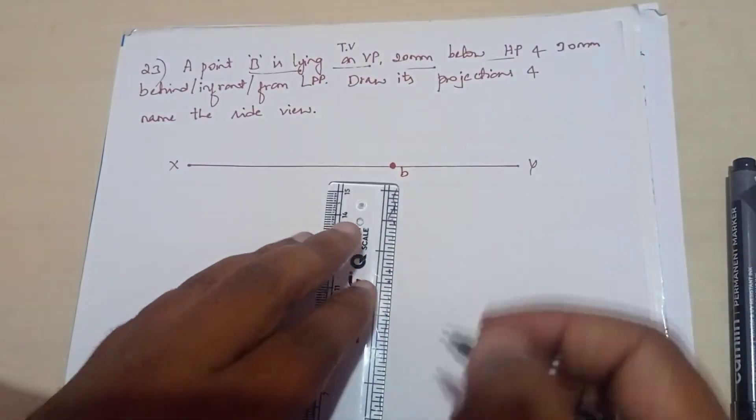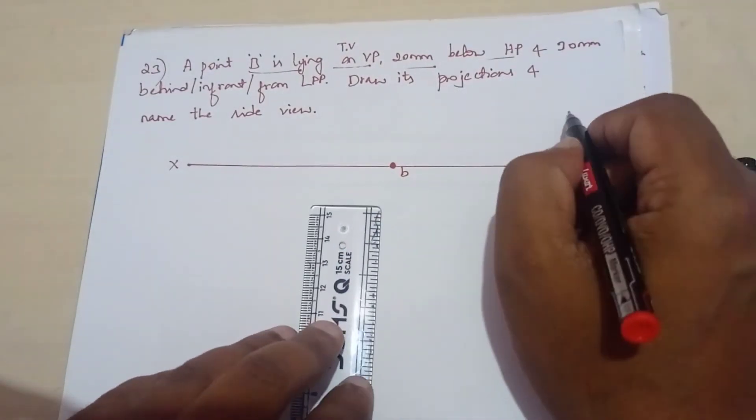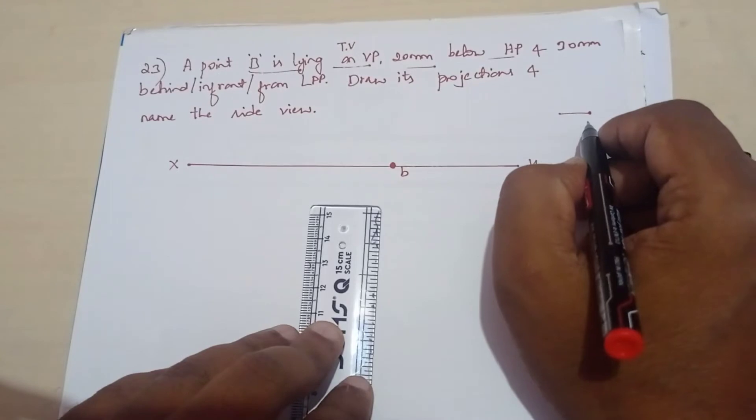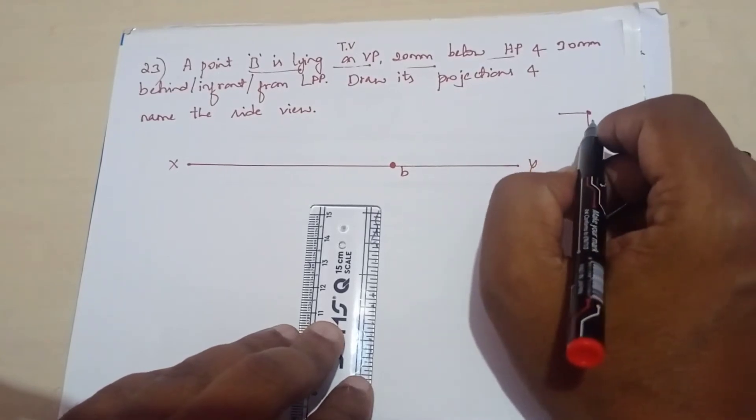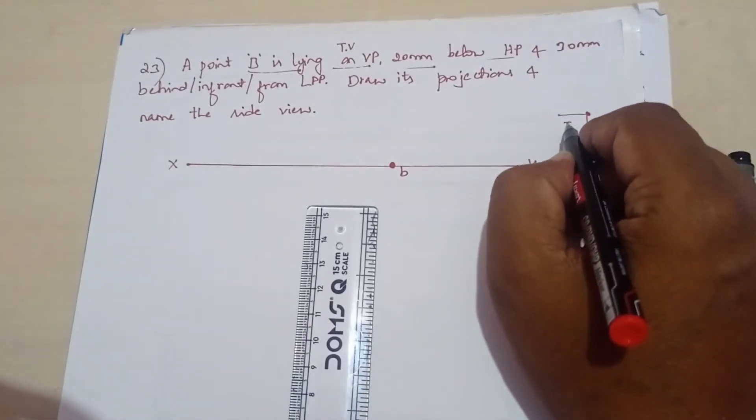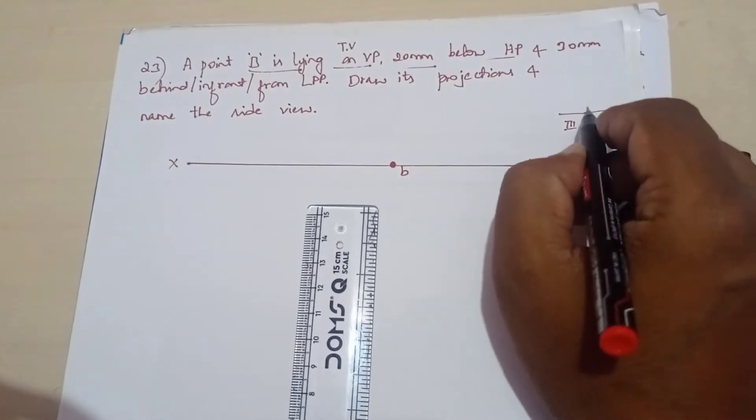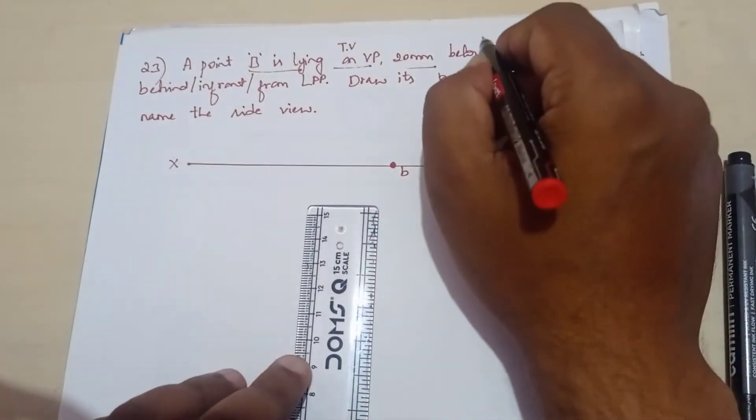It is below the HP means here you can see - below the HP means two chances: either it is lying in the third or in the fourth quadrant. In both the cases, that is your front view.